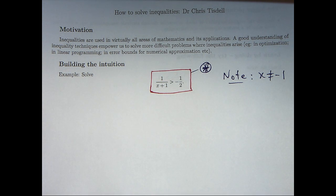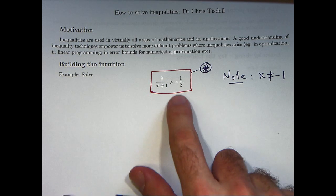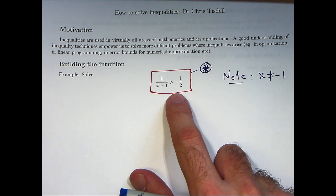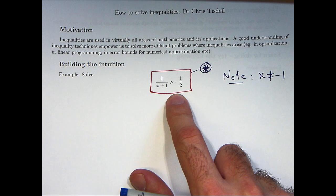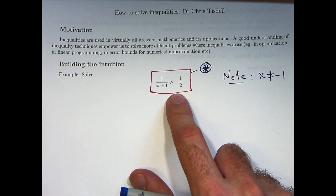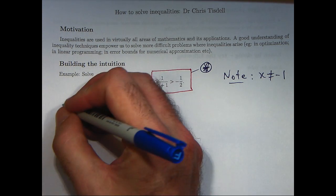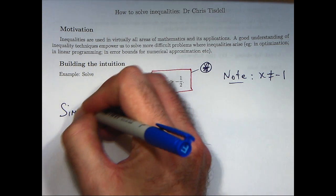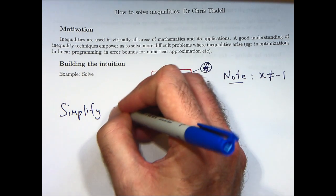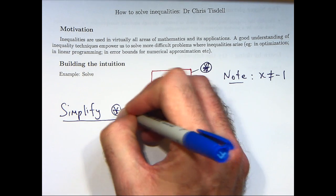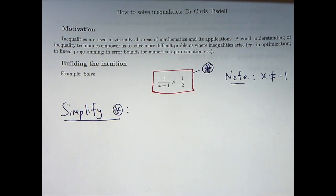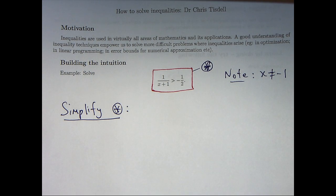Now, what we're going to do is a two-step process here. We're going to simplify star as much as possible through algebra and manipulate it. And then we're going to solve that simpler inequality. So we want to simplify our original problem as much as possible because it makes it easier.